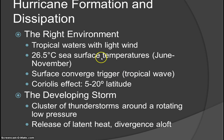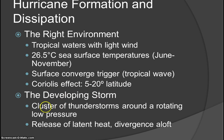Hurricane formation requires the right environment: tropical waters, light winds, generally 26.5 degrees latitude or ocean surface temperatures of 80 degrees Fahrenheit or warmer, typically June through November. Surface convergence from a tropical wave disturbance is needed, along with the Coriolis effect between 5 and 20 degrees north and south latitude. The developing storm is a cluster of thunderstorms around a rotating low pressure system, powered by the release of latent heat and divergence aloft. Weak winds throughout the upper atmosphere are also required.